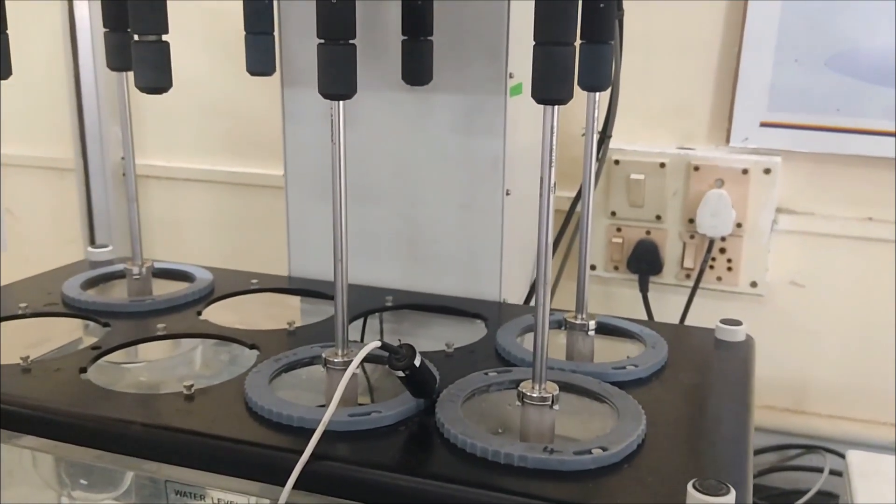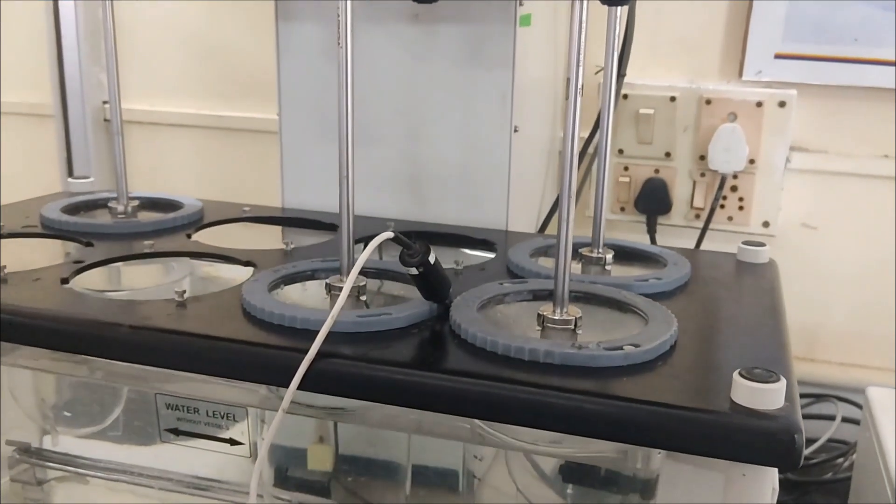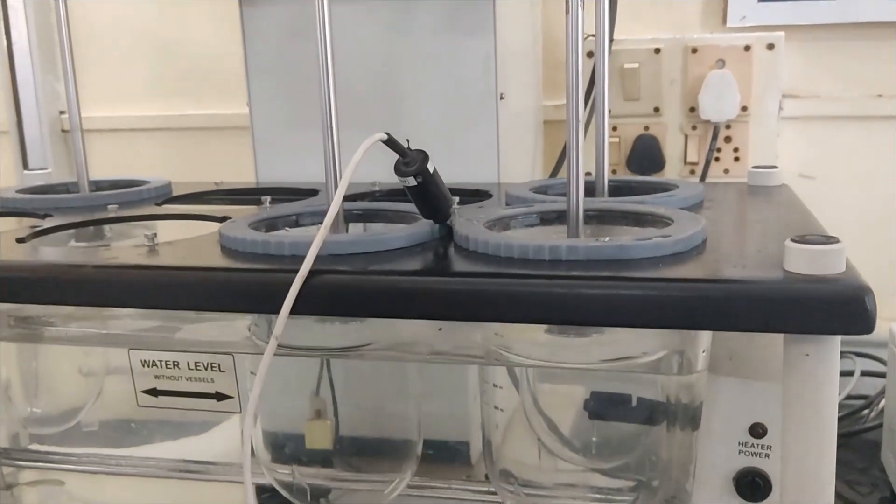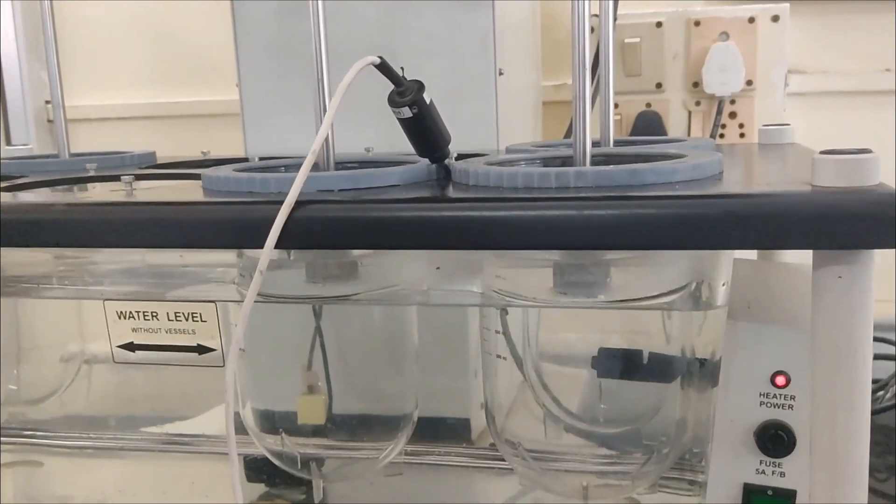The USP Type 1 dissolution apparatus typically consists of a cylindrical vessel, called a dissolution vessel, which is immersed in a constant temperature bath set at 37 degrees Celsius.